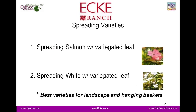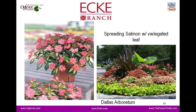The next series is the spreading varieties. There are two within the spreading series: spreading salmon with variegated leaf and spreading white with variegated leaf. The best application for the spreading series is in the landscape and in hanging baskets — they have a different branch angle that lends itself well to an undulating habit needed in hanging baskets. You can see it's got a nice habit for the landscape, with good vigor as well.